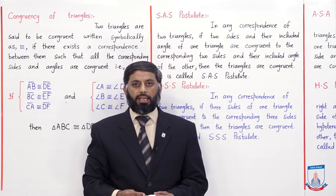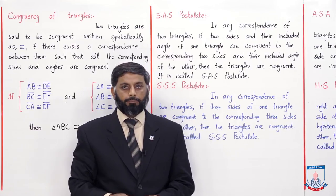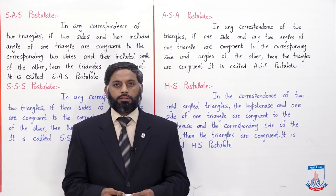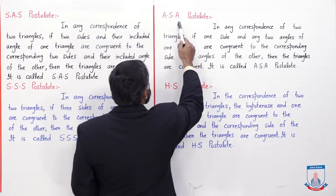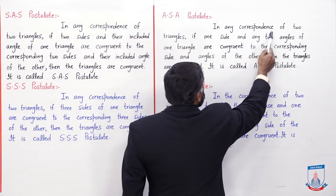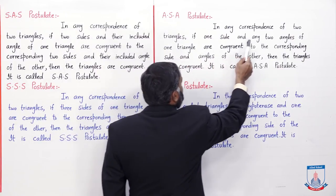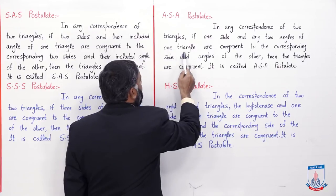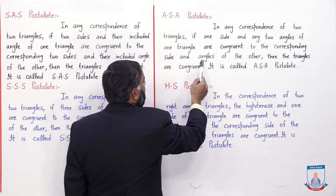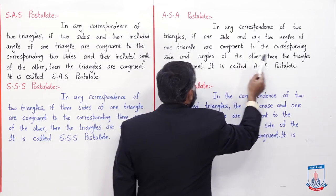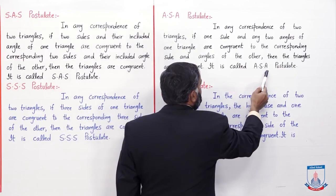Students, in definitions ko aap yaad karenge. Ab next postulate hai ASA postulate: In any correspondence of two triangles, if one side and any two angles of one triangle are congruent to the corresponding side and angles of the other, then the triangles are congruent. It is called ASA postulate.